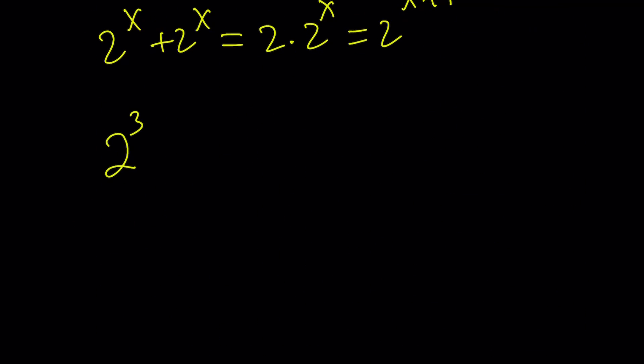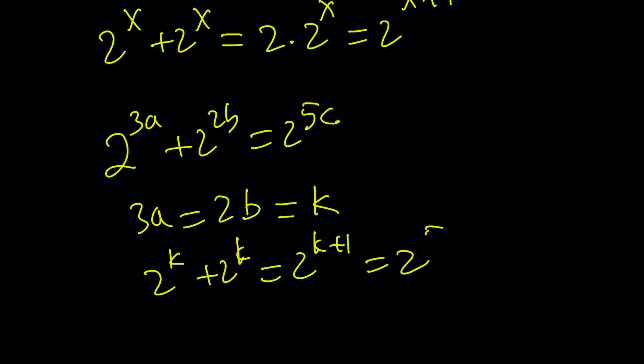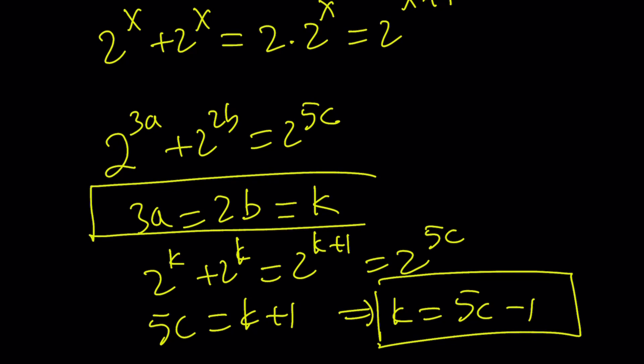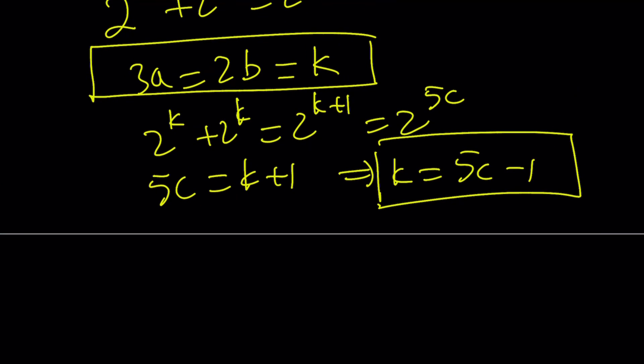Okay, let's rewrite the equation. So this means 3a equals 2b. Anyways, so from here we get the following. Let's go ahead and set both of these equal to k. Then we get the following: 2 to the k plus 2 to the k equals 2 to the k plus 1, and that is equal to 2 to the power of 5c. So from here, 5c becomes k plus 1, or k becomes 5c minus 1. So k equals 5c minus 1, k equals 3a, k equals 2b, and then put it all together, you're going to get the following: 3a equals 2b equals 5c minus 1.